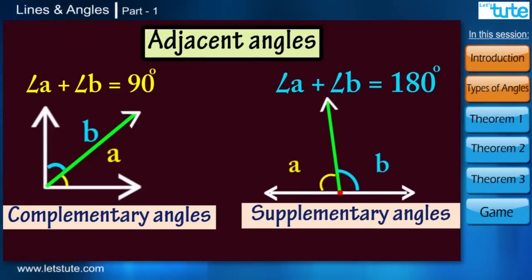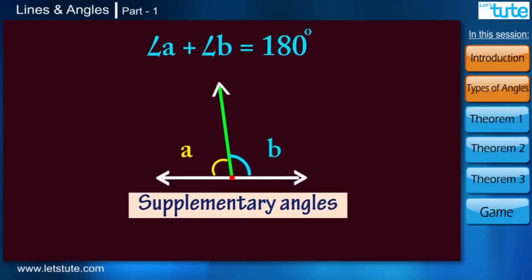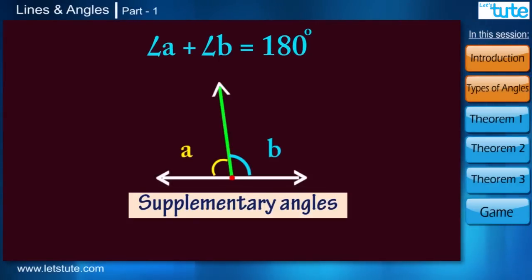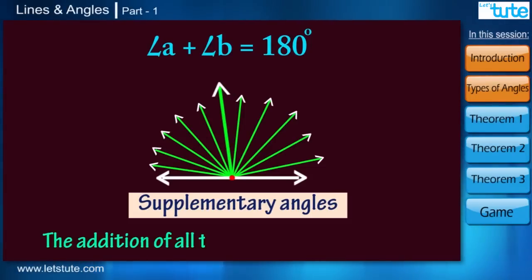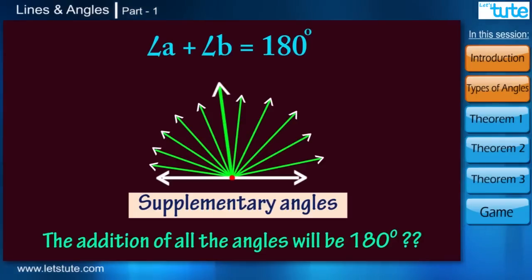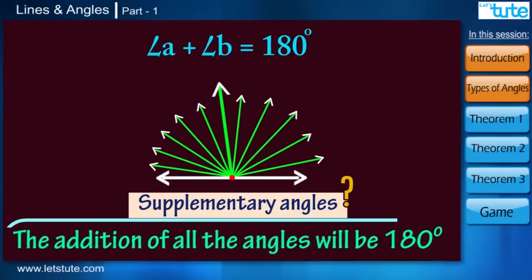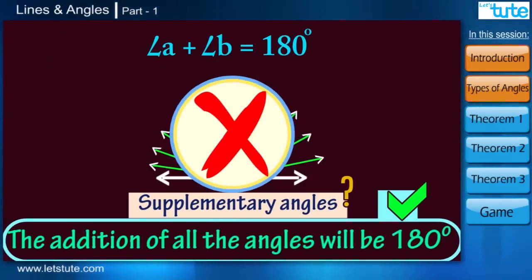Another way of calling supplementary angles is a linear pair of angles. As of now, there was only one ray standing on the line, and we call it supplementary angles. But what if there are various lines because of which various angles are formed? Well, then the addition of all the angles will be 180 degrees. But all of these angles together, we will not call them supplementary angles.